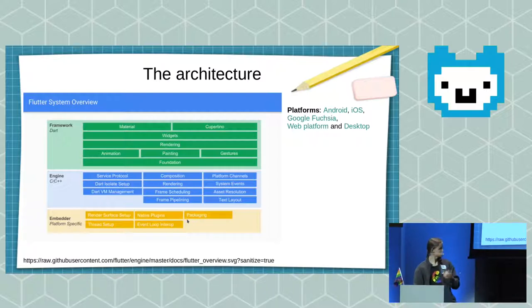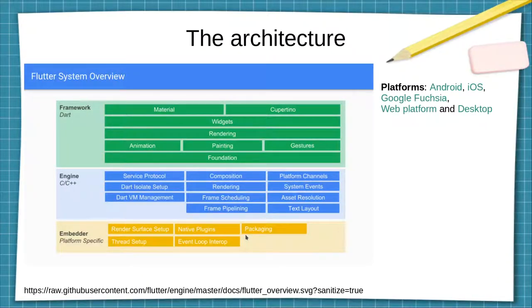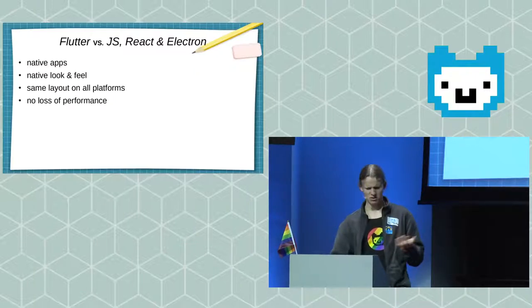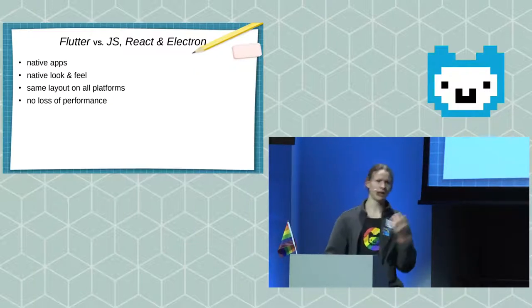There is also interaction with the platforms themselves. For example, you can bind Kotlin or Java code on an Android application to Dart, or Objective-C or Swift code on iOS. So there is an interface between the Flutter code, the Flutter VM, and the platform. That is the biggest difference between tools like React Native, JavaScript, Electron, and Flutter.